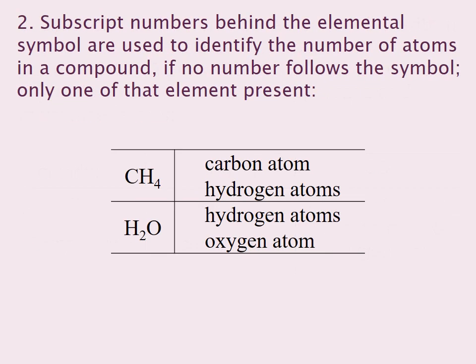Point 2: Subscript numbers behind the elemental symbol are used to identify the number of atoms in that compound. If no number follows the symbol, only one of that element is present.